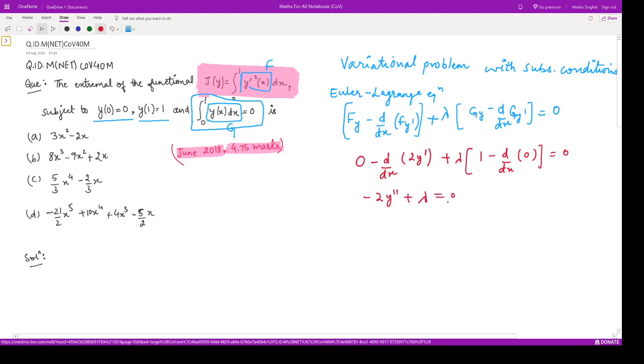This is a second order differential equation whose solution can be found easily by integrating twice. So y = -λx²/4 + Ax + B. Here A and B are constants and are to be determined, along with λ.